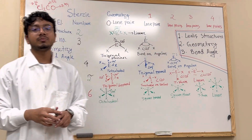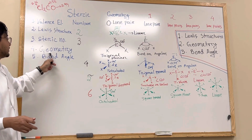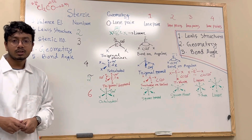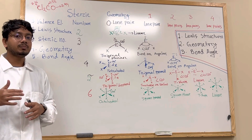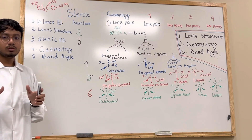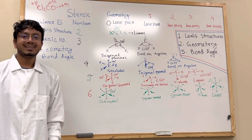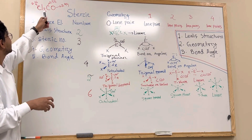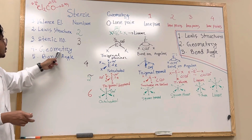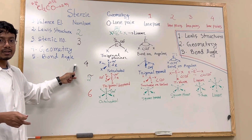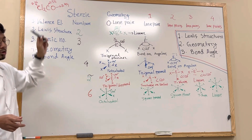In today's video, I will specifically show you the compound Cl2CO — its Lewis structure, geometry, and bond angle. At the same time, I will show you how the bond angle is affected by lone pair electrons.